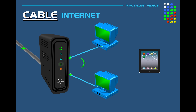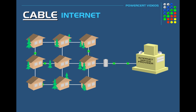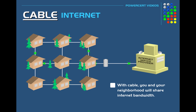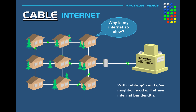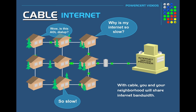Now cable does have a downside. You, along with the other homes in your neighborhood, will all have to share a pool of bandwidth provided by your cable provider in your area. During peak hours of surfing the internet, streaming, or downloading, you may experience a slowdown in your internet speed because the people in your neighborhood are all using the internet bandwidth.